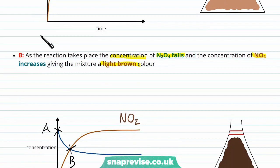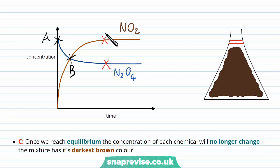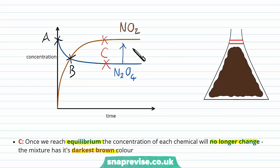Looking later in time when an equilibrium has been established — point C on the graph — the concentrations of each chemical no longer change. You can see how the lines have flattened out, so the concentration stays the same as time increases. The mixture has its darkest brown colour here, and the rate at which dinitrogen tetroxide is decomposing into NO2 is the same as the rate at which NO2 is recombining back, so there are no changes.